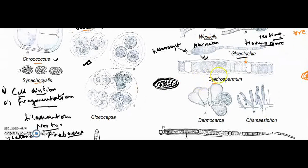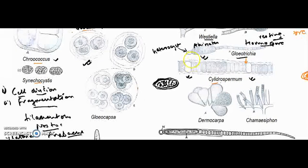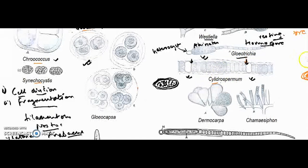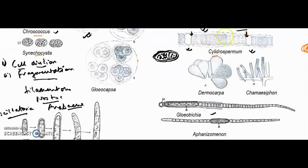In Cylindrospermum, heterocysts act as a reproductive unit. The juncture of the heterocyst and vegetative cell is relatively weaker. The cells in between get separated and undergo vegetative reproduction or may form hormogonia structures.